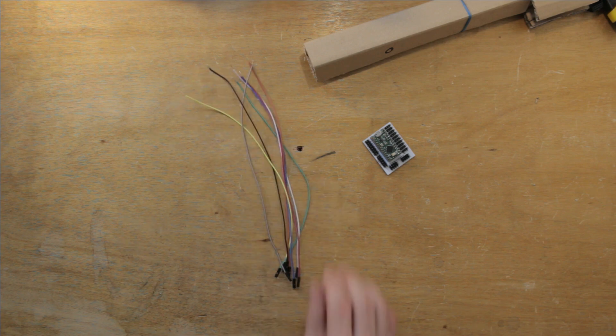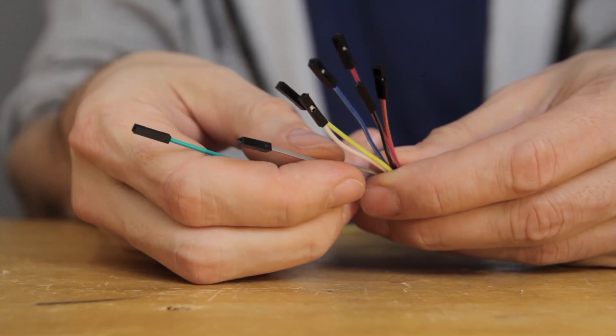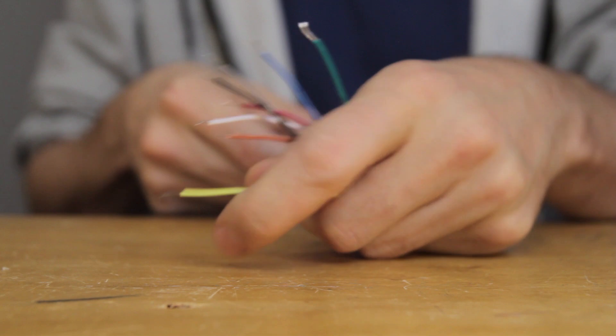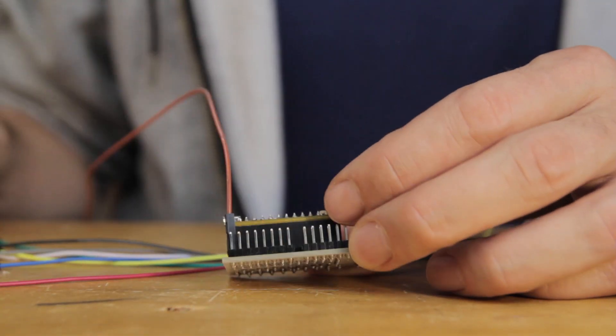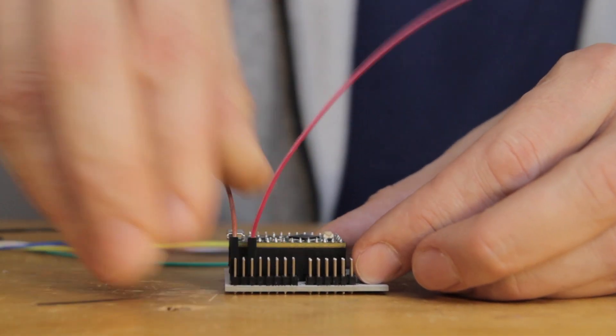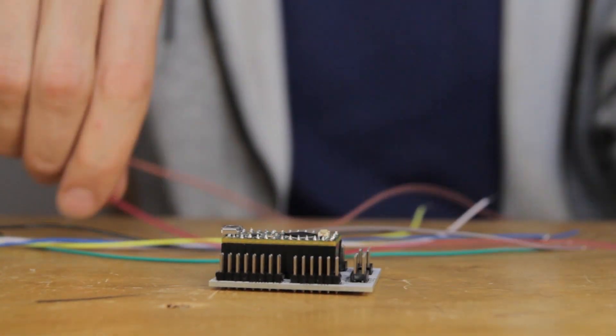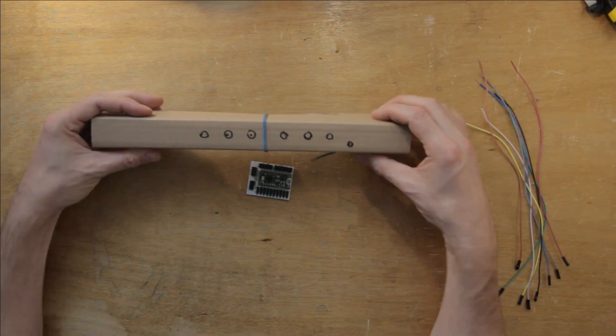So I'll get out eight individual jumper cables, female headers on one end, and now I'll be able to plug each key individually, making for a simpler circuit and simpler code. Nice.